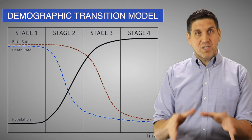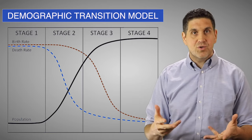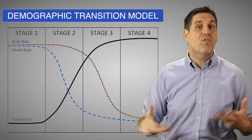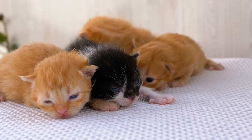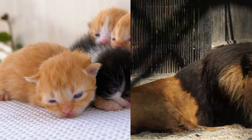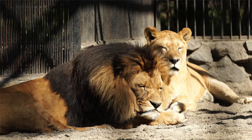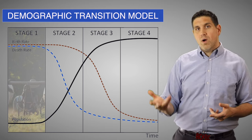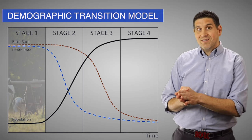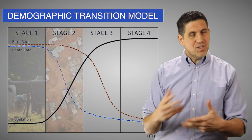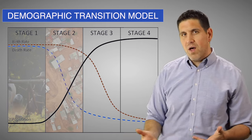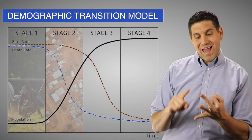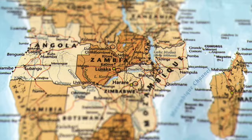Now, up to this point I've been talking about Western industrialized countries, but this process is happening all over the world. Every country is at a different stage of development, and you can see that in their demographics. Right now there are really no countries in Stage 1, but there are some countries that are in Stage 2 — these countries have underdeveloped economies with high birth rates, high death rates, and exponential population growth.